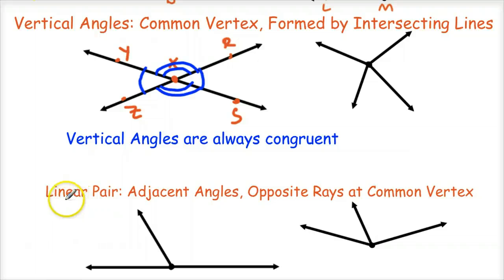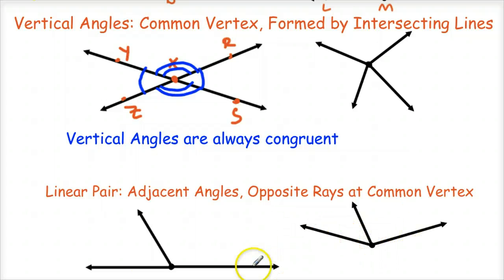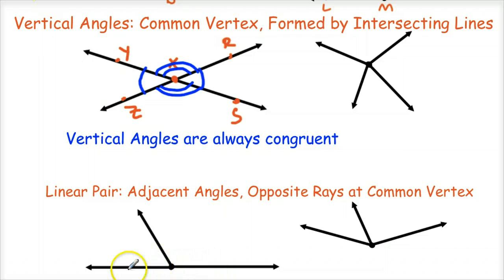The last of the basic relationships is a linear pair. It's a set of adjacent angles, and they have opposite rays at a common vertex. Here is an example of a yes scenario and a no scenario. With the linear pair, we see that the common vertex is the start of two opposite rays, which makes up a line. So the bottom is a line.